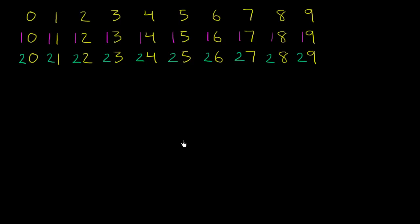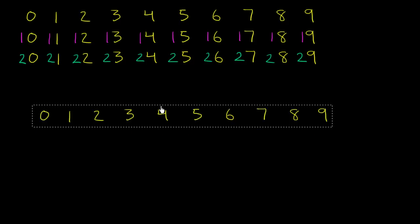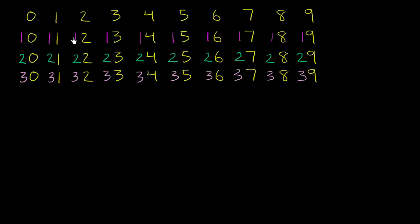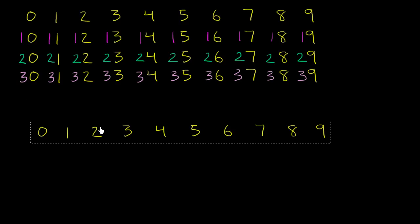I think you might start to see the pattern here. What are we going to do for the next row? Well, now we're in the 30s. So the first number, 30, is 30 plus 0, 30 plus 1, 30 plus 2, 30 plus 3, which is 33, 34, 35, 36, 37, 38, 39. The number on the right keeps going from 0, 1, 2, 3, 4, 5, 6, 7, 8, 9. And the number on the left — if you're between 10 and 19, you always have a 1; between 20 and 29, you always have a 2; between 30 and 39, you always have a 3.